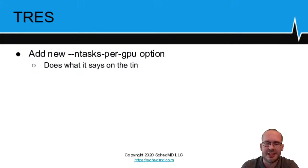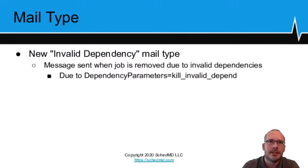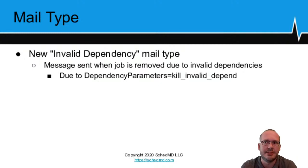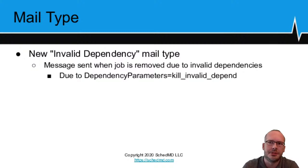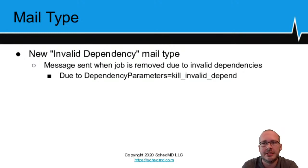On TRES: we added a new --ntasks-per-gpu option, which will assign that many tasks per GPU in your job steps. For mail types, we're adding a new mail type for invalid dependencies, for sites that have the dependency parameter kill_invalid_depend turned on. This ensures that if users have built more complicated dependency chains, those jobs get flushed out and users can be emailed specifically on that event.